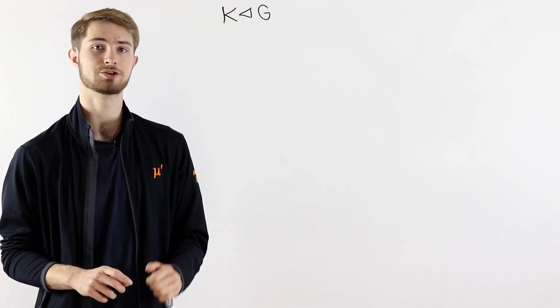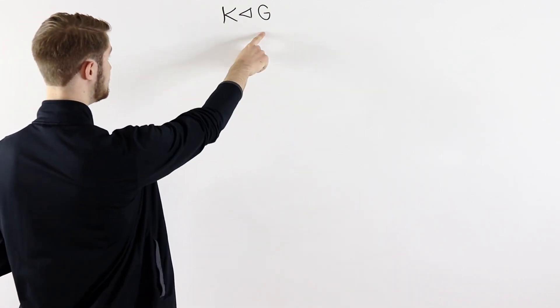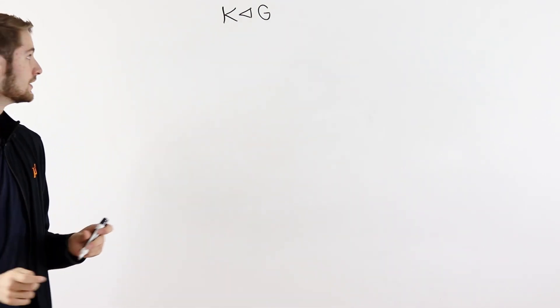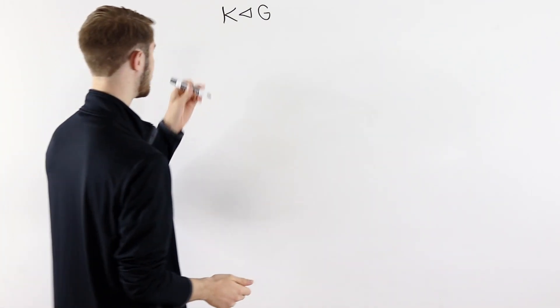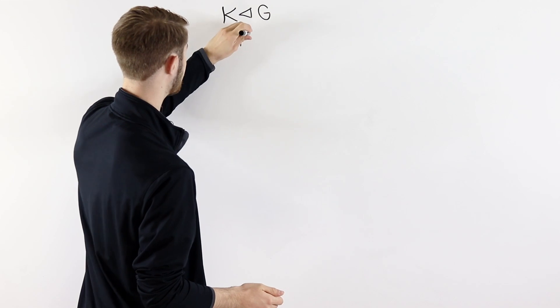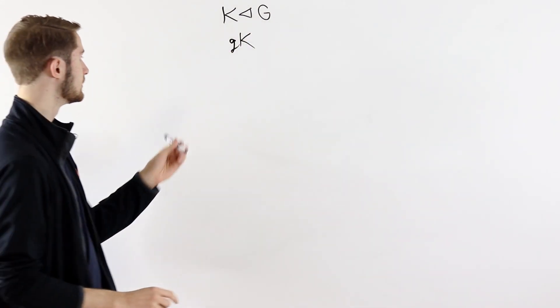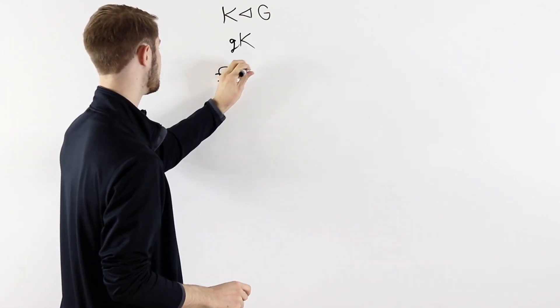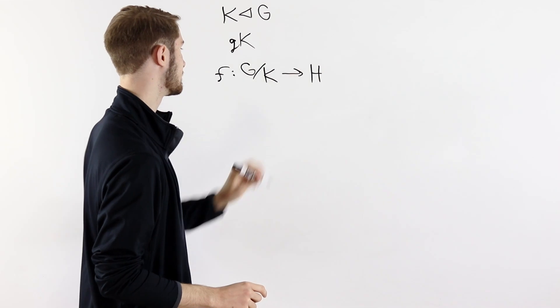We are going to talk about defining homomorphisms on quotients. This video uses the language of groups, but the same idea applies to other algebraic structures such as rings. Let's say we have a group G and a normal subgroup K of G. We can form the quotient group G mod K, and the elements of that quotient are cosets, which look like gK, where little g is an element of the original group. Now let's say we want to define a homomorphism F that goes from the quotient group G mod K to some other group H.